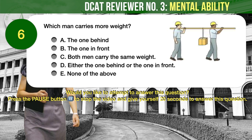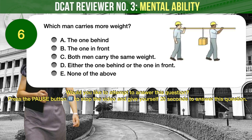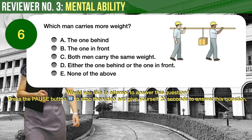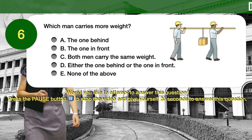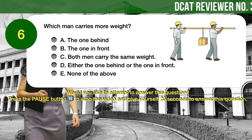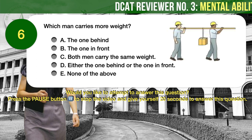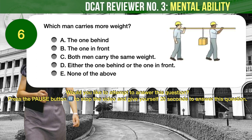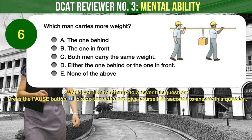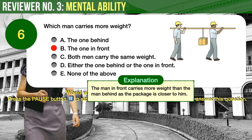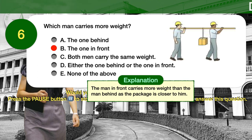Question number 6. Referring to the figure to the right, which man carries more weight? A: The one behind. B: The one in front. C: Both men carry the same weight. D: Either the one behind or the one in front. E: None of the above. The correct answer is B, the one in front, as the package is closer to him than to the other man.